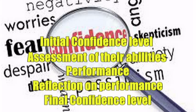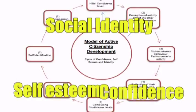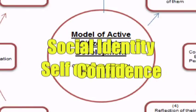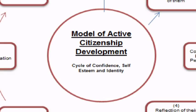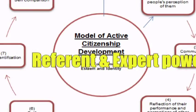Now when we put the social identity, self-esteem, and confidence cycles together, we can create a clearer model of how an individual can develop their identity as a citizen in their community. The arrows in the model indicate the role model's opportunity to influence the person with their referent and expert powers. The role model can encourage a person to learn from their mistakes if they felt they didn't perform to a good standard in the activity.